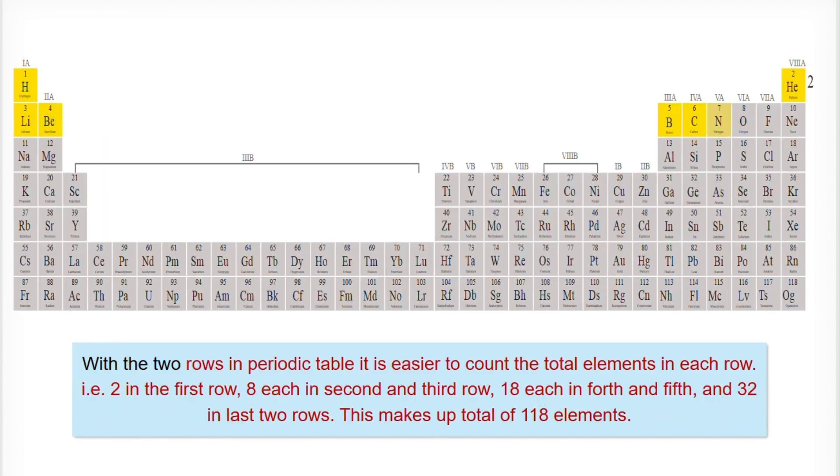With the two rows in the periodic table, it is easier to count the total elements in each row. That is 2 in the first row, 8 each in second and third row, 18 each in fourth and fifth, and 32 in last two rows. This makes a total of 118 elements.